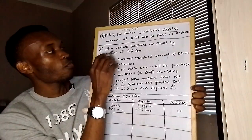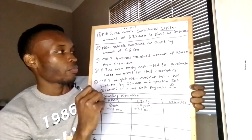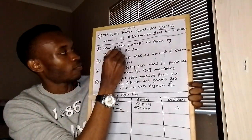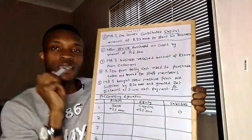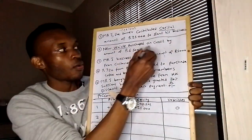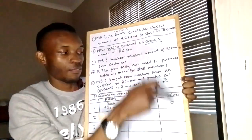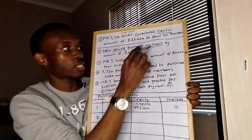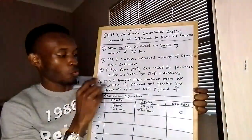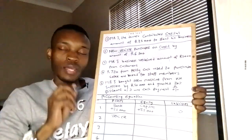Now let's go to number two. A new vehicle was purchased on credit for $6,500. We identify two components: the first is the vehicle, which we know is an asset. The second component — Mr. J purchased the vehicle on credit, not cash — which means the company now has a liability because they owe someone.